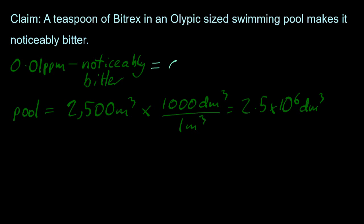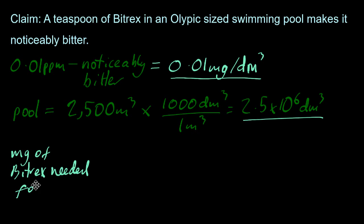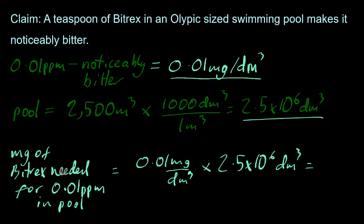Converting parts per million, we can take that into a milligrams per kilogram, which is the same as milligrams per decimetre cubed, because we're talking about water. So I want to know how many milligrams of Bittrex are needed to get 0.01 parts per million in this pool. So I'm going to multiply that parts per million number by the volume of the pool. And that gives me 25,000 milligrams, which I cheekily converted into 25 grams.